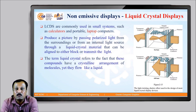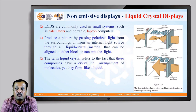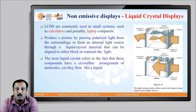Another type of display device using non-emissive technology is the liquid crystal display device. LCD devices are commonly used in small systems like calculators and laptops. They produce pictures by passing polarized light from the surrounding or from an internal light source through a liquid crystal material that can be aligned to either block or transmit the light. The term liquid crystal refers to the fact that these compounds have a crystalline arrangement of molecules yet they flow like a liquid.